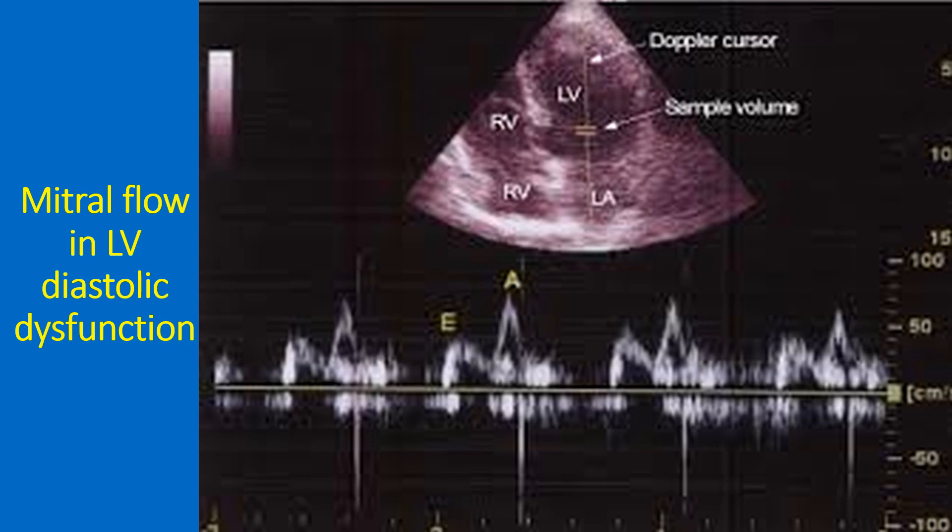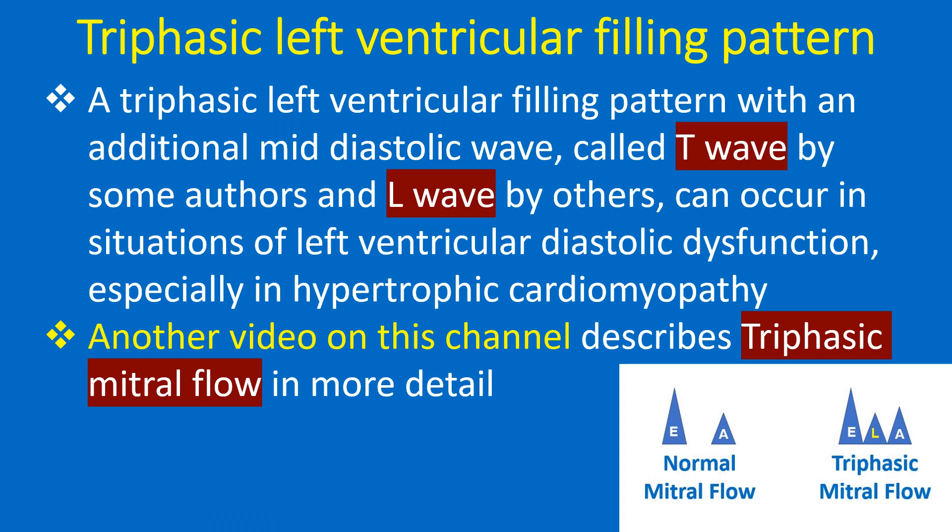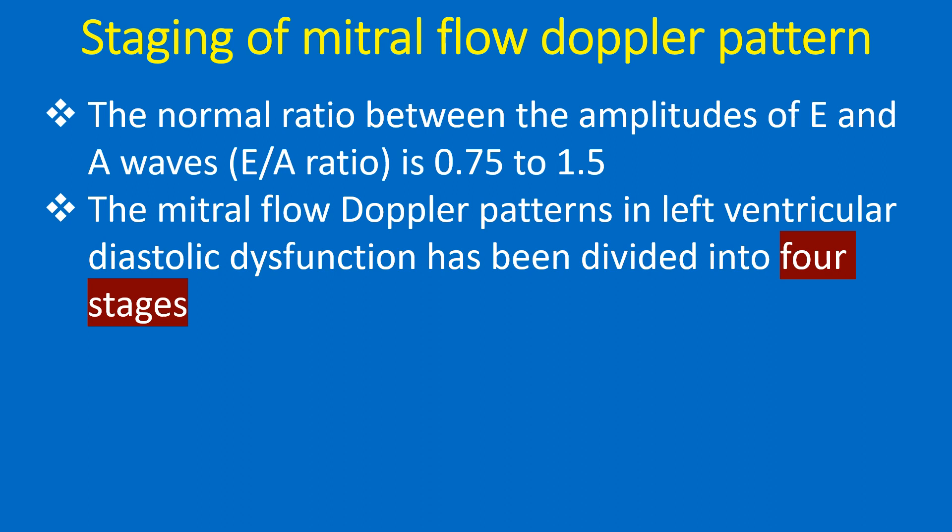The X-axis is time and the Y-axis represents velocity in centimetres per second. A triphasic left ventricular filling pattern with an additional mid-diastolic wave — called the T-wave by some and L-wave by others — can occur in situations of left ventricular diastolic dysfunction, especially in hypertrophic cardiomyopathy. Another video on this channel describes triphasic mitral flow in more detail. The normal E-by-A ratio is 0.75 to 1.5.